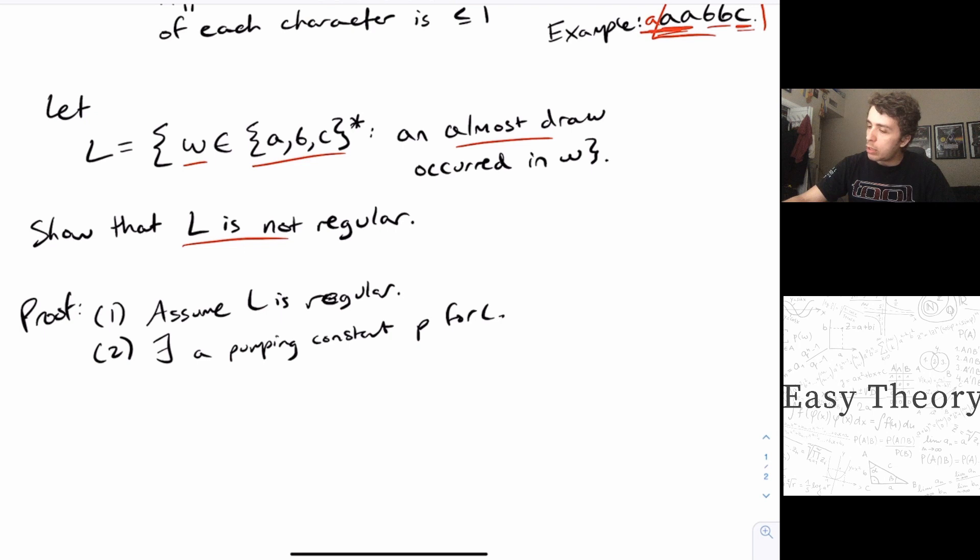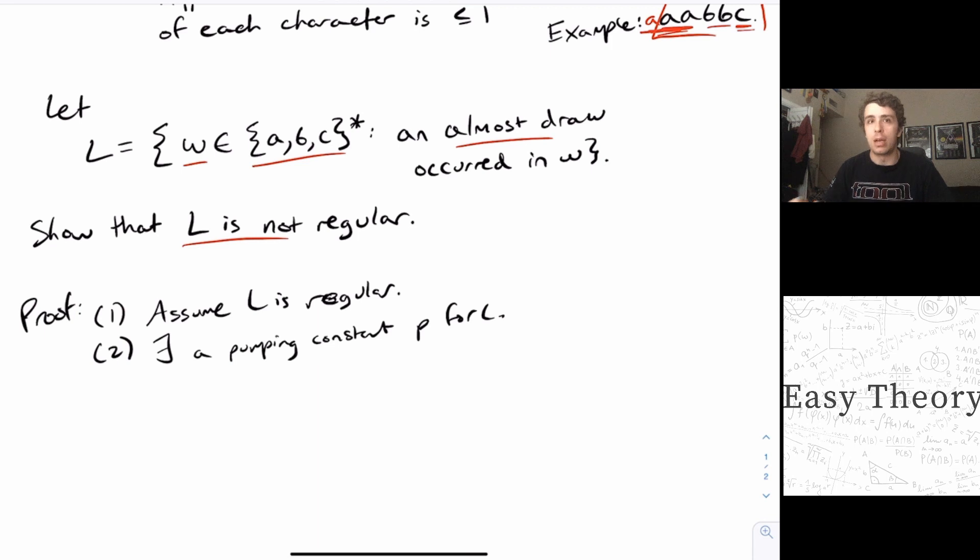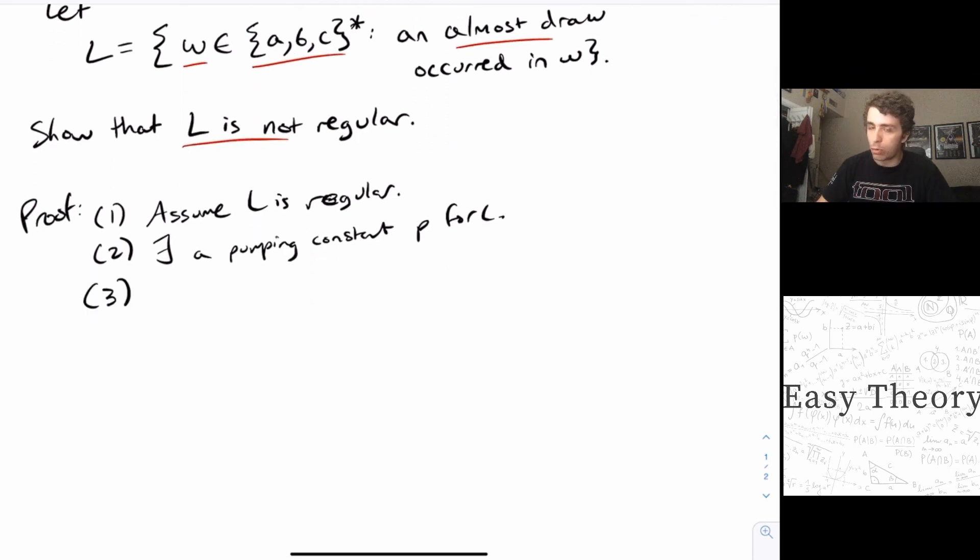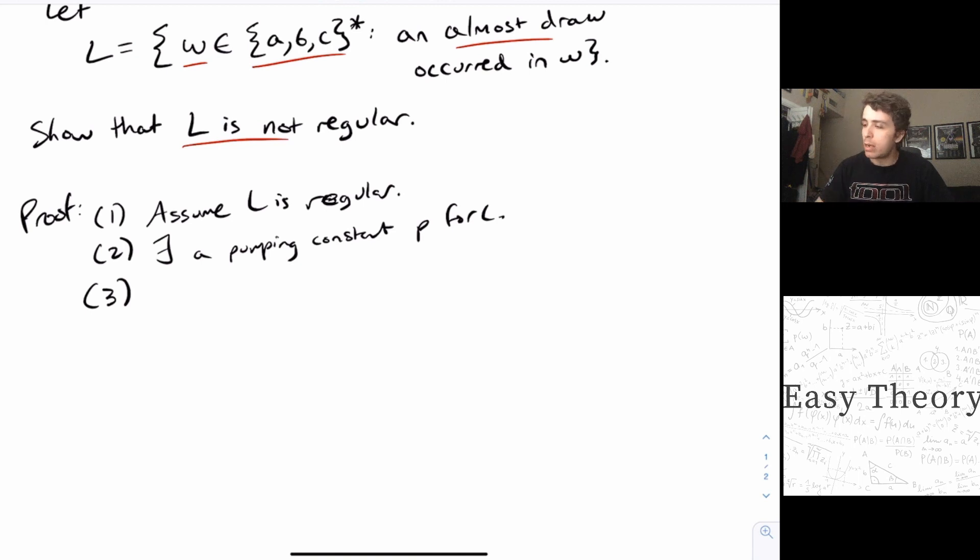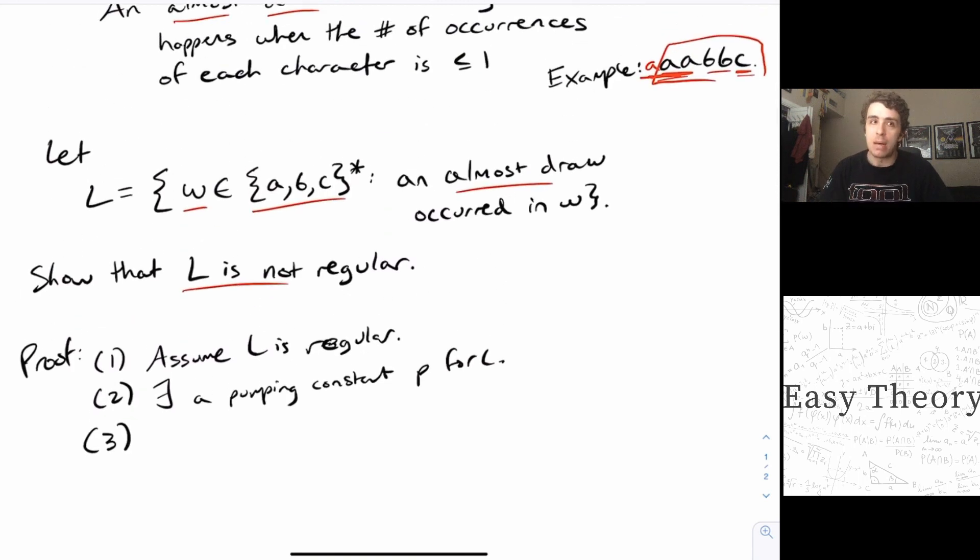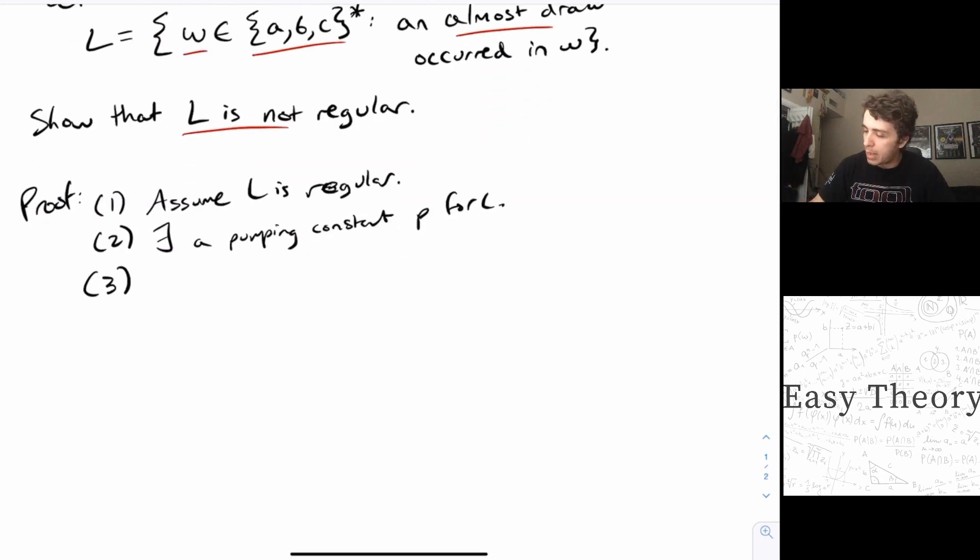And now we got to pick a string in the language of length at least P. So what we want to do here is we want to pick a string that's in the language such that there is an almost draw in that string. And my advice for what string to pick is to pick one such that we're right on the boundary of not being an almost draw anymore. So for example, what we could pick, and this will work, is to choose the string A to the P plus one, B to the P, C to the P. So note that the difference in the maximum number of one character versus another is one, which therefore is an almost draw, and is clearly of length at least P because we have length three P plus one.